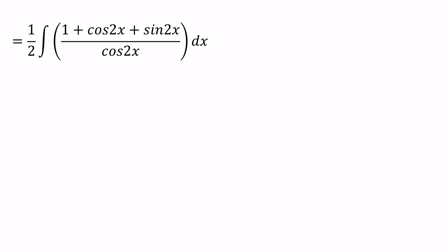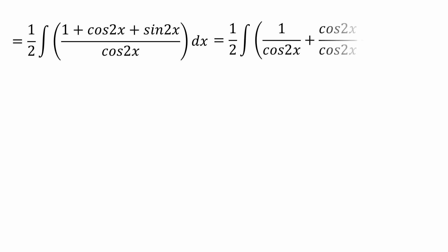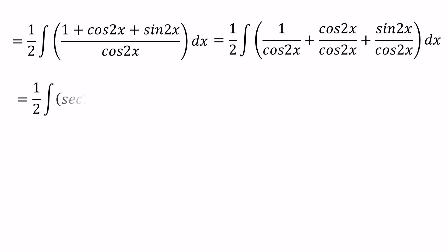We can split these values separately: 1 over cos 2x, cos 2x over cos 2x, and sin 2x over cos 2x. Now, 1 over cos 2x can be written as sec 2x. The cos 2x over cos 2x terms cancel out, giving us 1. And sin 2x over cos 2x equals tan 2x.